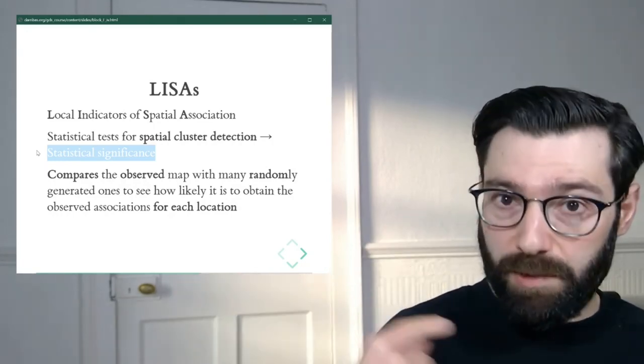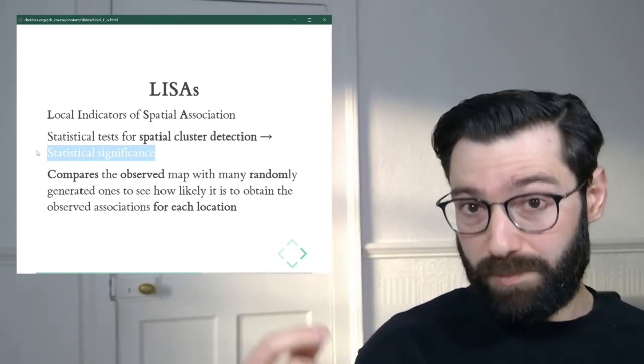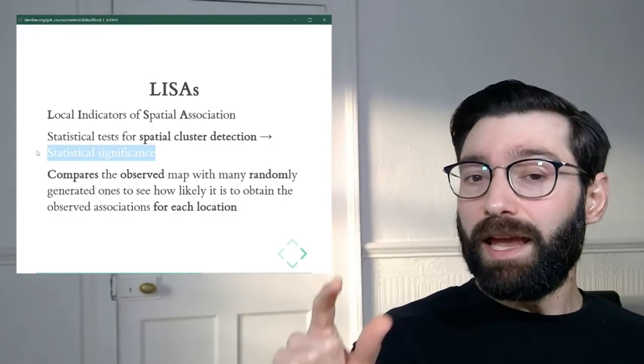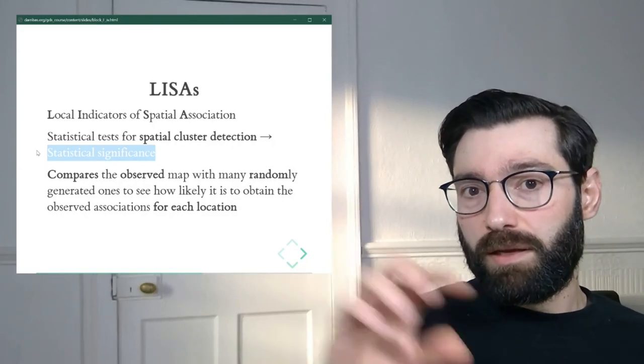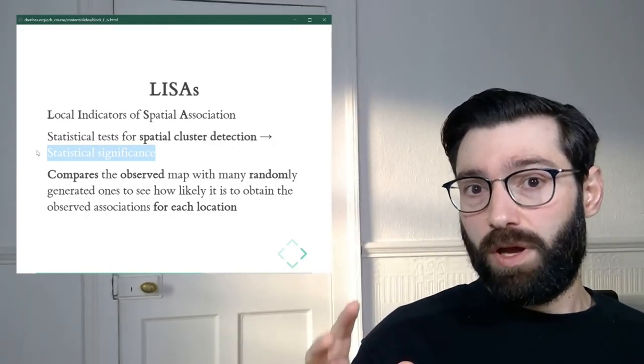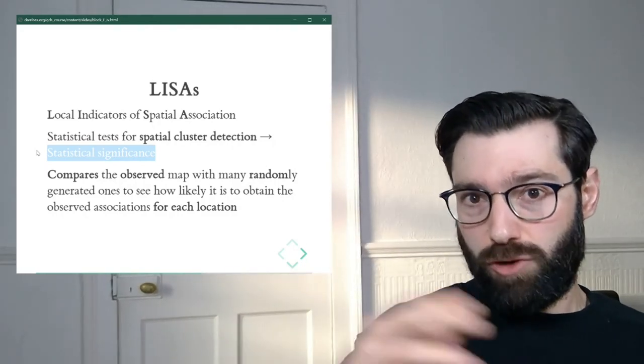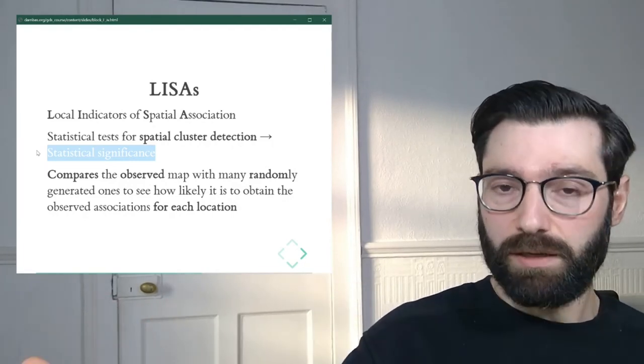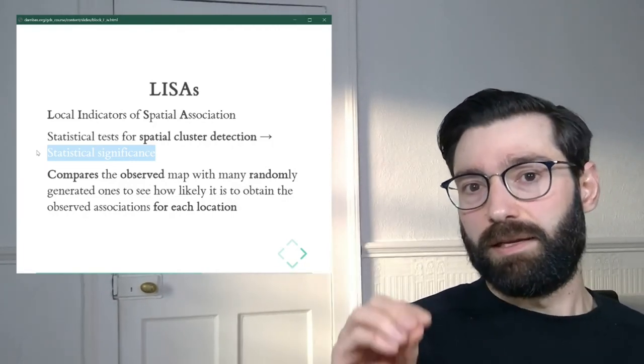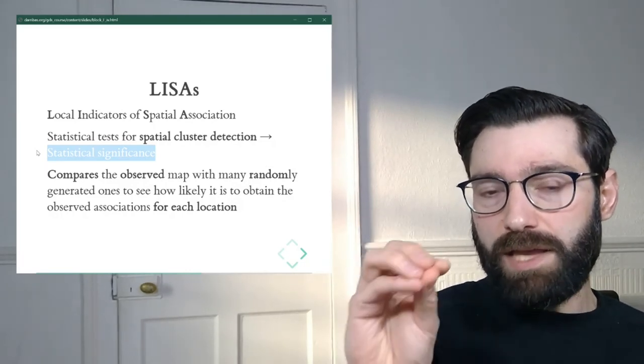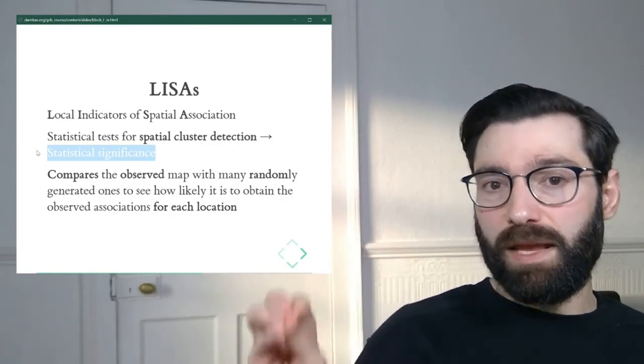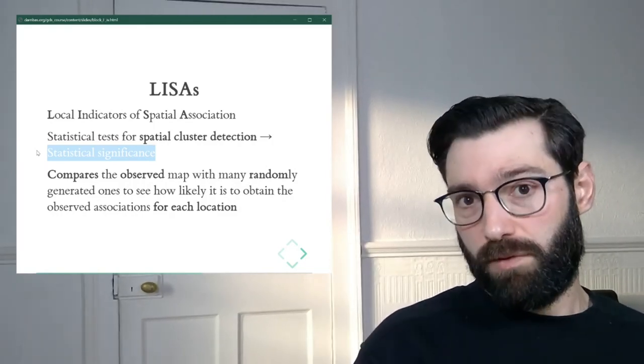And what you're looking for every single observation in your dataset is to what extent the relationship between the value of that observation and its neighbors, operationalized by the spatial lag, is a departure from what you would expect in the overall map. So in other words, given the general trend of spatial autocorrelation or spatial clustering, the LISAs tell us something about how the individual case for every observation is different from the general trend.